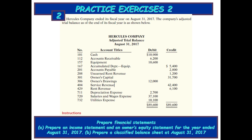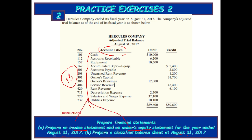The instructions are to prepare financial statements: an income statement, an owner's equity statement for the year ended August 31, 2017, and a classified balance sheet at August 31, 2017. These 13 account titles will be divided across the income statement, the owner's equity statement, and the balance sheet.